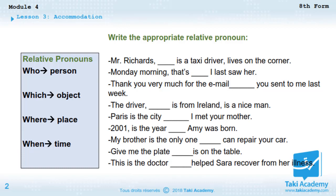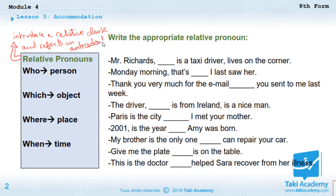In this video we will deal with relative pronouns. Relative pronouns are the pronouns that introduce a relative clause and refer to an antecedent. We have the relative pronoun 'who' which introduces a person, the relative pronoun 'which' which introduces an object, the relative pronoun 'where' which introduces a place, and the relative pronoun 'when' which introduces time.